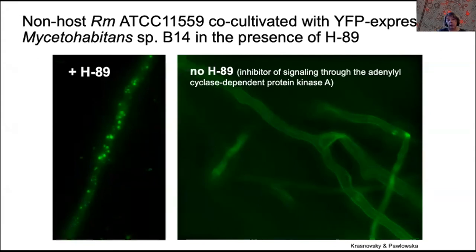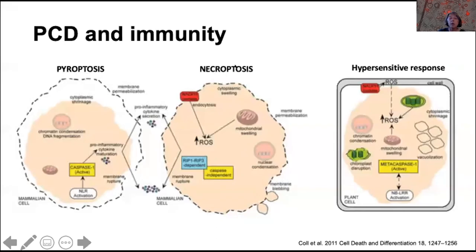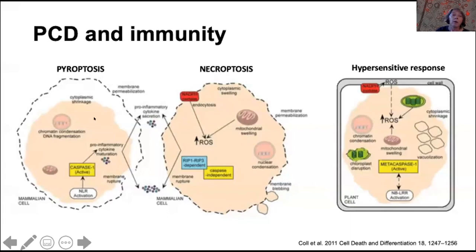This suggests that innate immunity mechanisms are involved in mutualism functioning in rhizopus microsporus and perhaps other fungi, and we are pursuing it. More importantly, we are interested in whether programmed cell death is a component of the innate immunity response in mucoromycotina fungi. Programmed cell death is, in animals and plants, an ultimate way of eradicating invading microbes — manifested by pyroptosis and necroptosis in animals, and the hypersensitive response in plants.